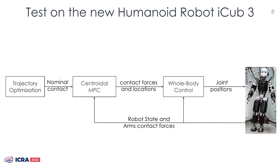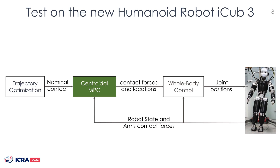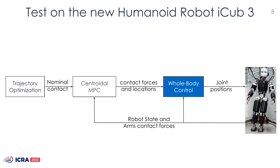To validate the performances of the centroidal MPC on humanoid robots, we embed the controller into a three-layer controller architecture. The trajectory optimization layer generates the nominal contacts. The centroidal MPC computes the feasible contact branches and location, and the whole body control loop evaluates the robot joint positions.